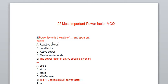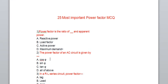Just see the first question. Power factor is the ratio of dash and apparent power. Power factor is the ratio of what? Active power and apparent power. So the option is C, active power. The next one is the power factor of AC circuit is given by what? The power factor of AC circuit, cos phi.